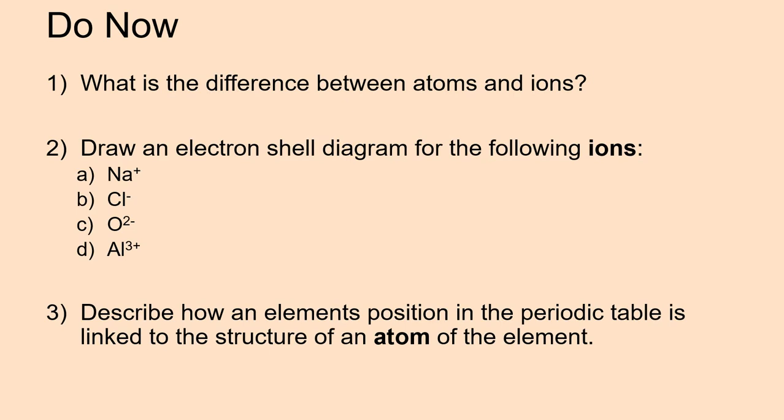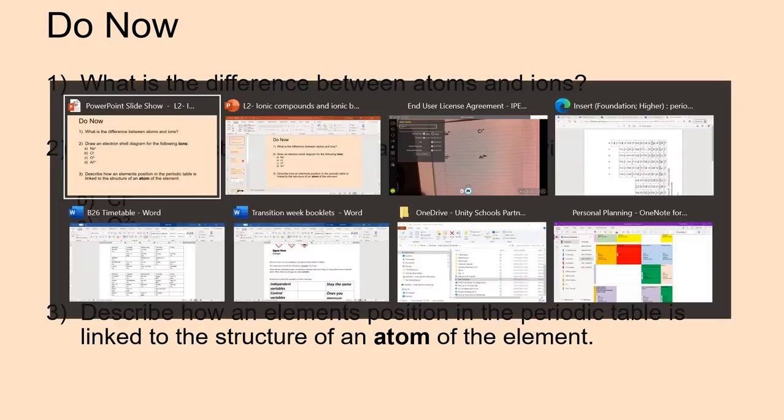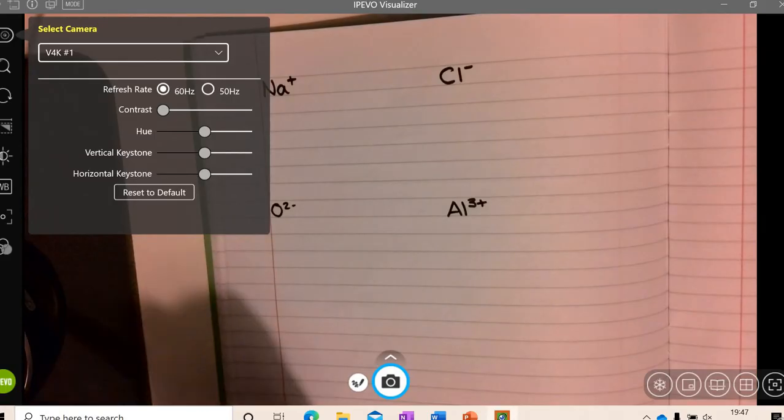Question 2. Draw an electron shell diagram for the following ions. So we have sodium, chlorine with a negative charge, that will become a chloride ion. We have O2 minus and we have Al, which is aluminium, 3 plus. So I'm just going to switch to my camera so that you can see this.